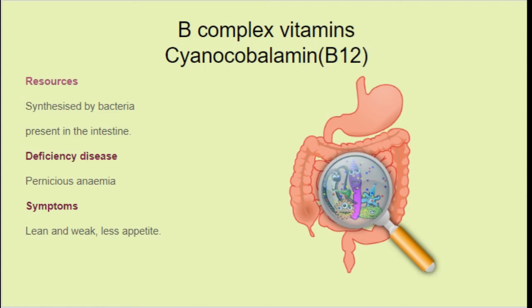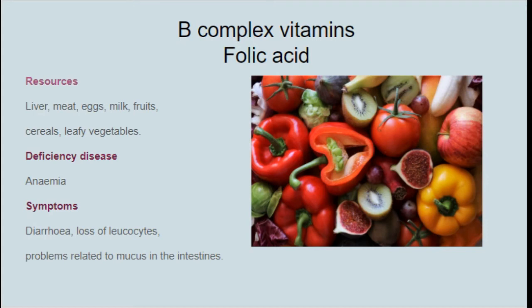Vitamin B12, with scientific name cyanocobalamin, has resources synthesized by bacteria in our intestine. The deficiency of this vitamin leads to pernicious anemia, which is more severe than normal anemia. Symptoms are lean and weak body and less appetite. One more vitamin is folic acid. Resources for folic acid are liver, meat, egg, milk, fruits, cereals, and leafy vegetables. Deficiency of folic acid also leads to anemia, with symptoms including diarrhea, loss of leukocytes, and problems related to mucus in the intestine.